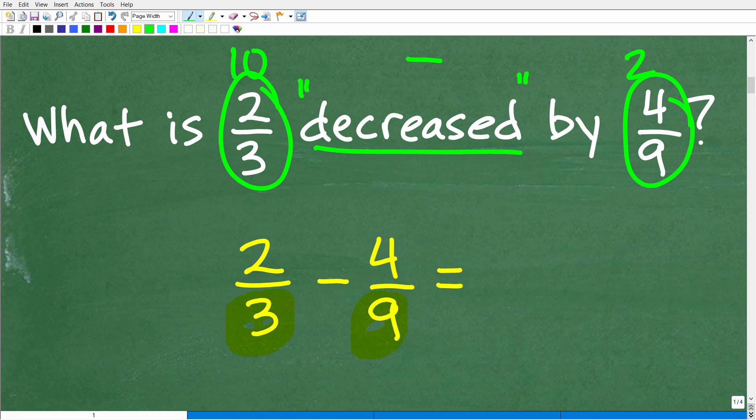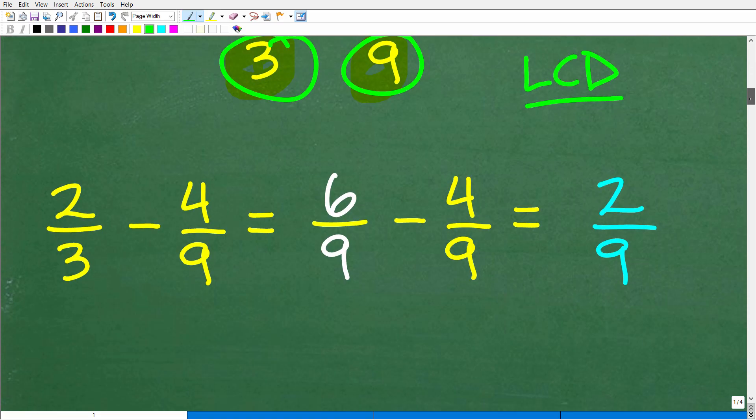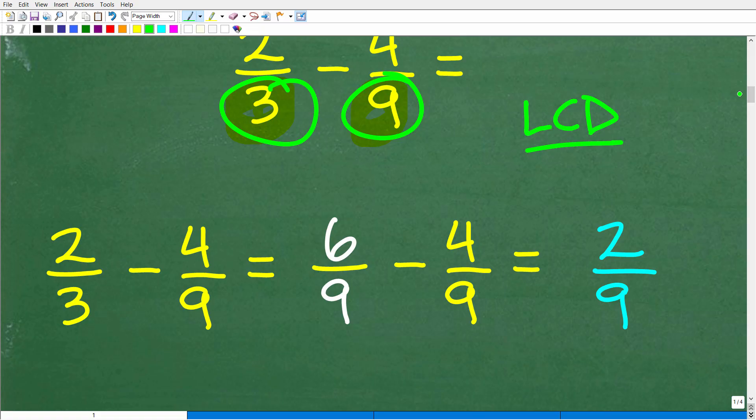So we don't have the same denominators. We can't subtract the fractions as they are now. So we need to find the lowest common denominator. What number does both nine and three have in common such that we can have the same denominator? Well, the answer is nine. The lowest common denominator is nine.